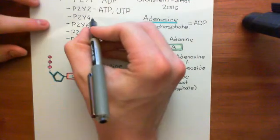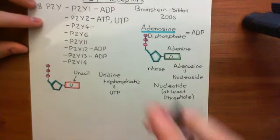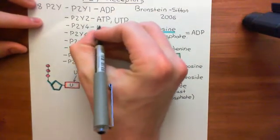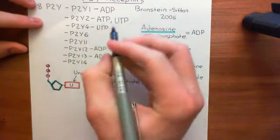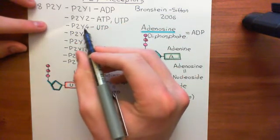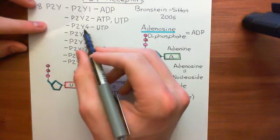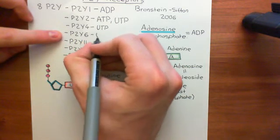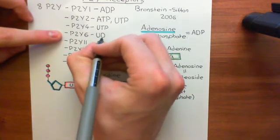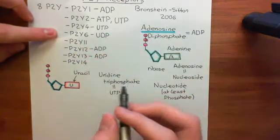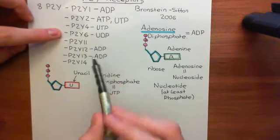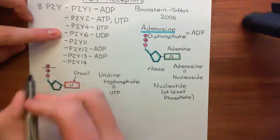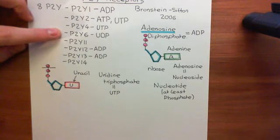Moving on to P2Y4 receptors — these are activated by just UTP, so uridine triphosphate molecules bind to P2Y4 receptors and activate them. Then moving on to P2Y6, which is activated by uridine diphosphate, UDP. All we need to do is take that final phosphate group off the uridine triphosphate and then we've got uridine diphosphate. So P2Y6 is UDP activated.